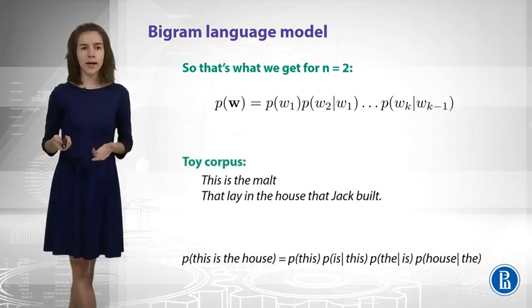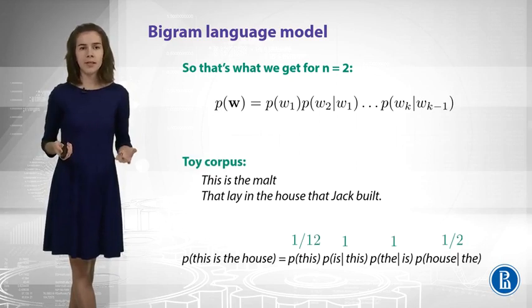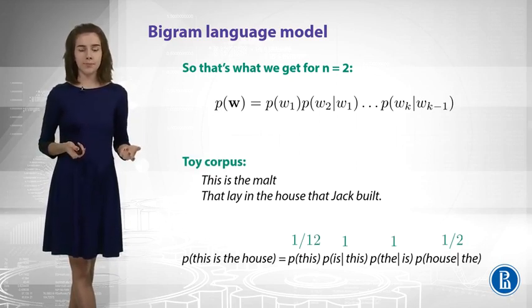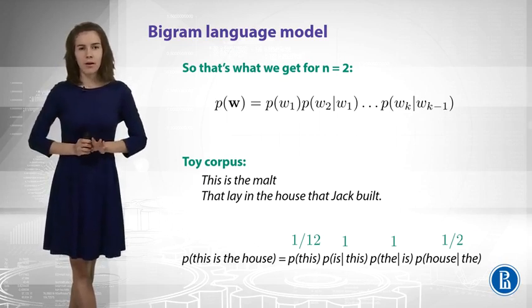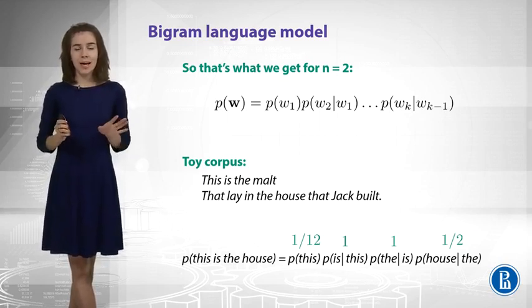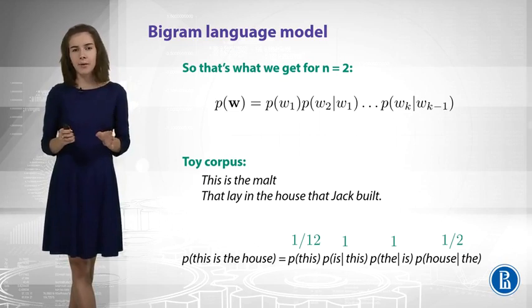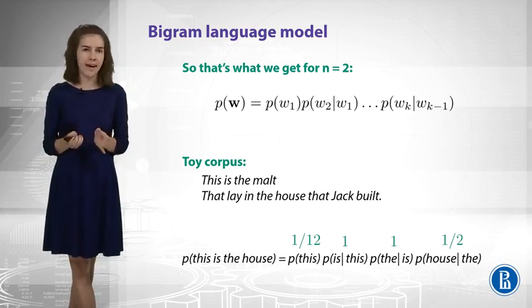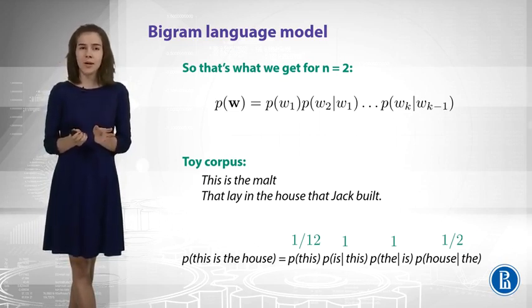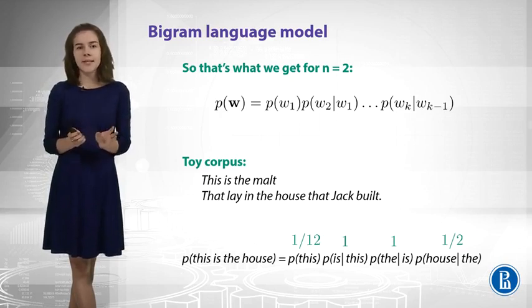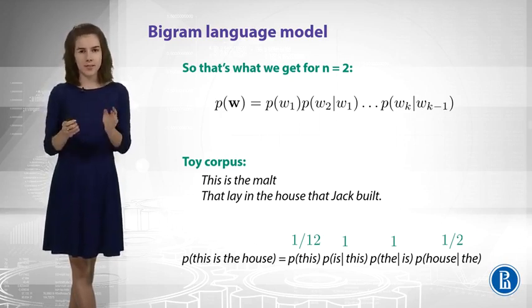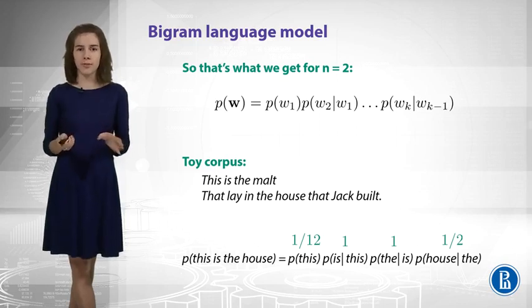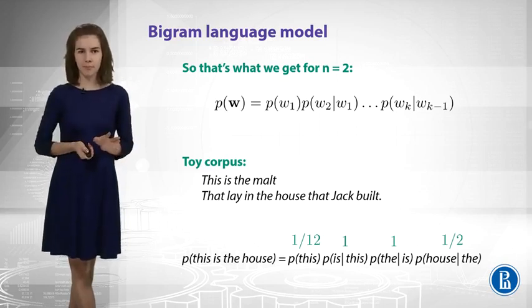So, for a toy corpus again, we can estimate the probabilities, and that's what we get. Is it clear for now? Well, I hope it is, but I want you to think about if everything is nice here. Are we done? Well, I see at least two problems here. And I'm gonna describe both of them, and we will try to fix them. Actually, it's super easy to fix them.